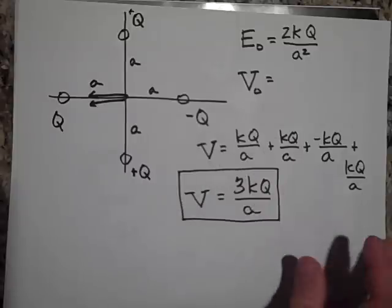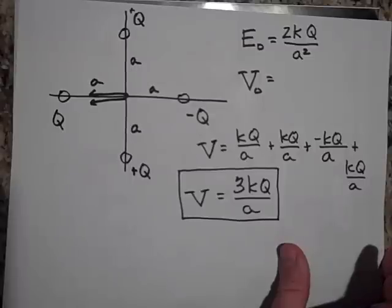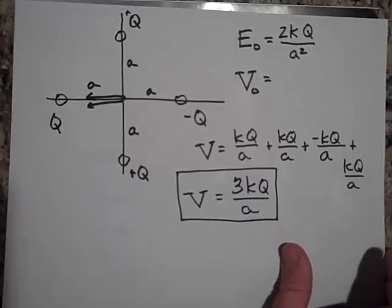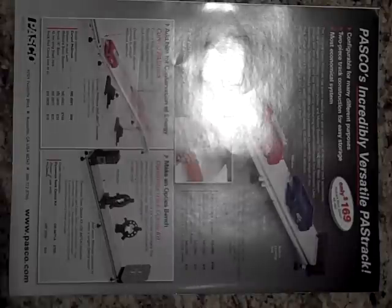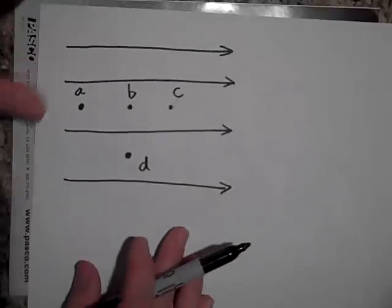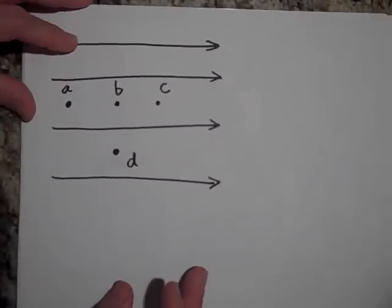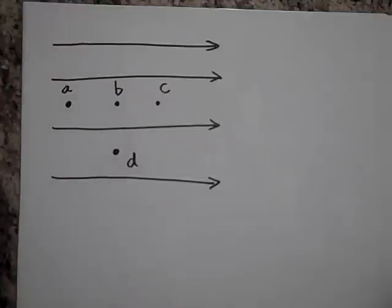So the voltage is much easier to work with because it's a scalar quantity. All right, next one. We got an electric field here and I'm wondering if you know which of these is at the higher potential. Which point A, B, C, or D is at the higher potential? Go ahead and pause and see if you can figure it out.